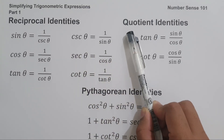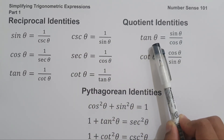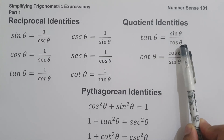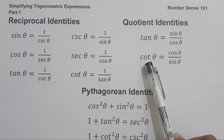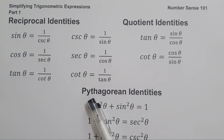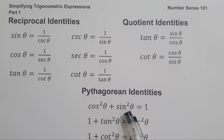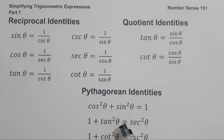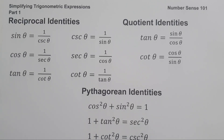We also have quotient identities: tan θ = sin θ / cos θ, and cot θ = cos θ / sin θ. And lastly, we have Pythagorean identities: cos²θ + sin²θ = 1, also 1 + tan²θ = sec²θ, and 1 + cot²θ = csc²θ.